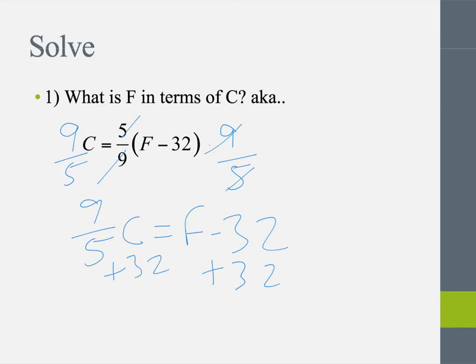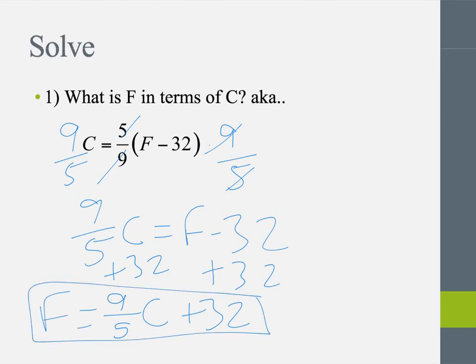So my answer is 9 over 5ths C. Let me write that 5 a little better there. Sorry about that. And then we have plus 32. And that would be my degrees Fahrenheit. So there's my new formula.